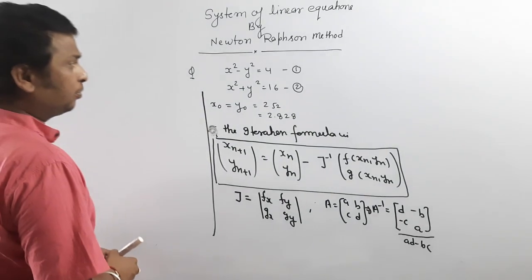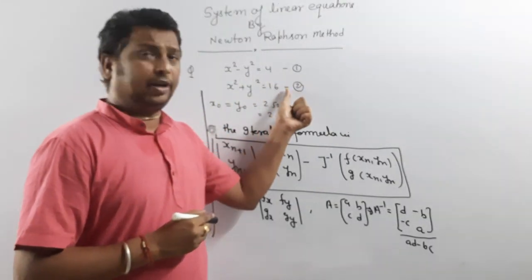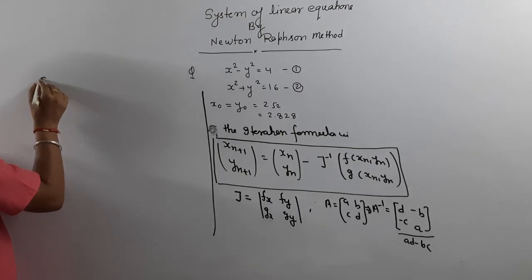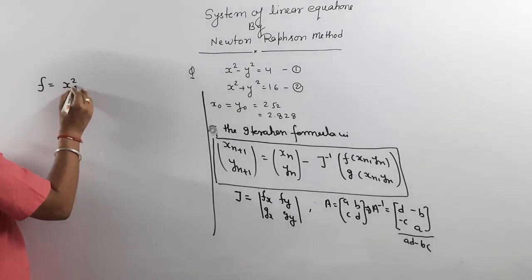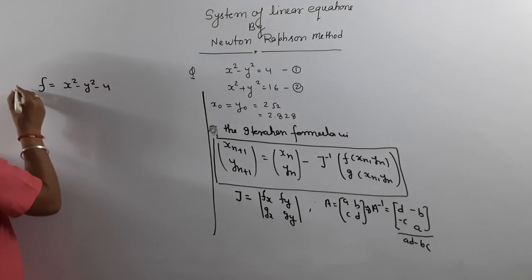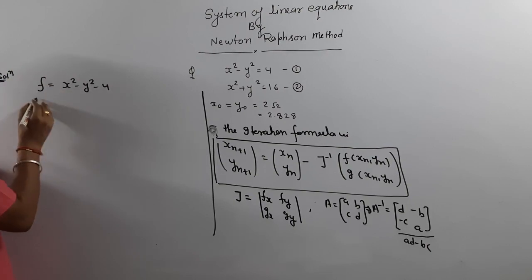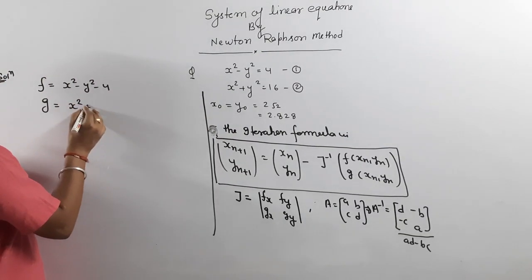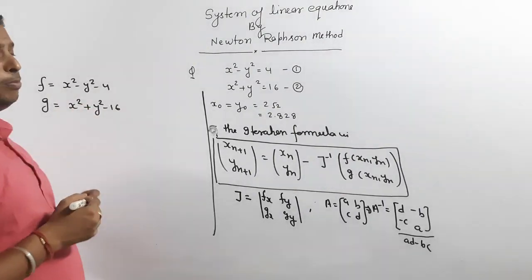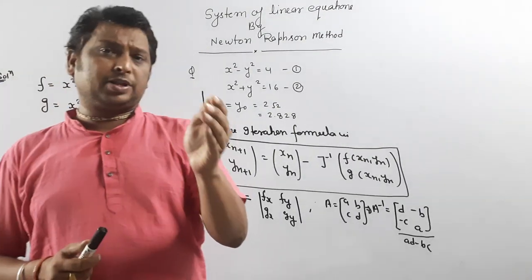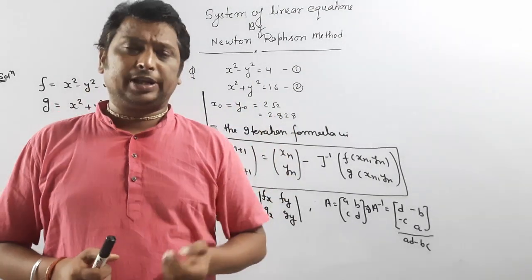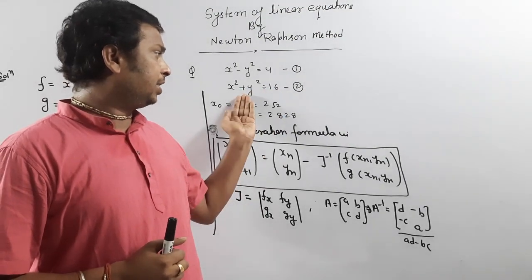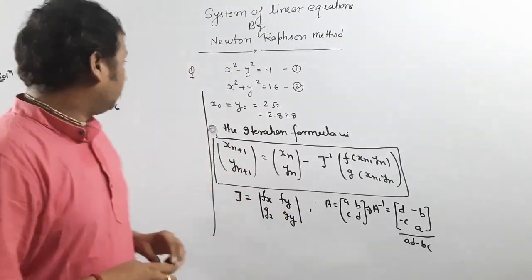Now I am going to explain the procedure. The procedure is very simple. Whatever equations are given — they will always give two equations — represent the first equation as f. So f is x squared minus y squared minus 4. And g is the second equation: x squared plus y squared minus 16. So you easily come to know f and g. Take everything to one side for each equation and denote them as f(x,y) and g(x,y).